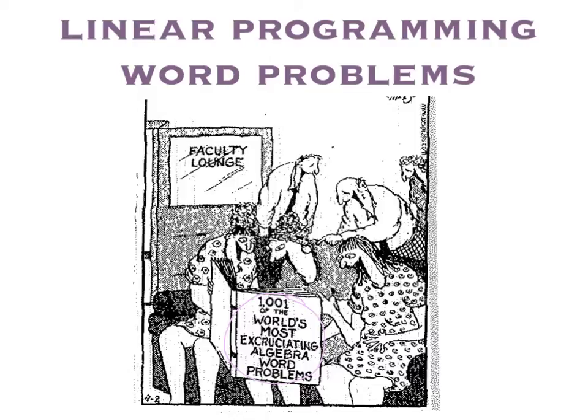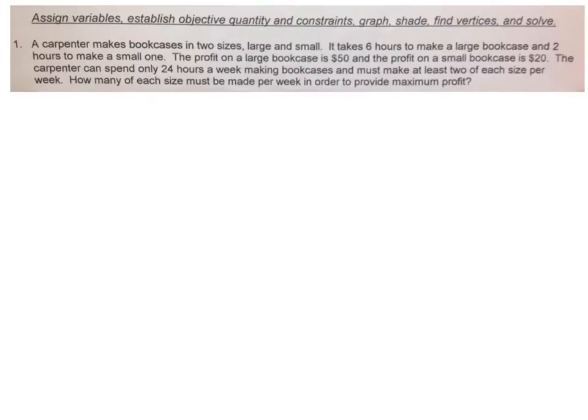This first one that we're going to do, by the way, is the first one on the worksheet that I'm going to give you tomorrow in class, so you won't have to redo it once you get that worksheet. Now, for each of these problems, you are required to assign variables, establish the objective quantity and constraints, graph it, shade the graph, find the vertices, and solve it. So you have to do all of those things.